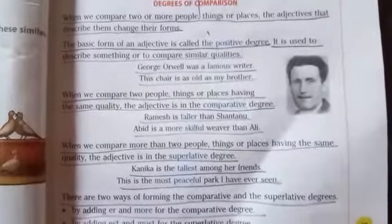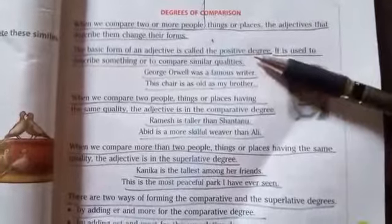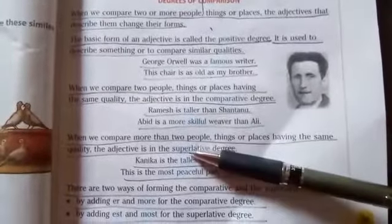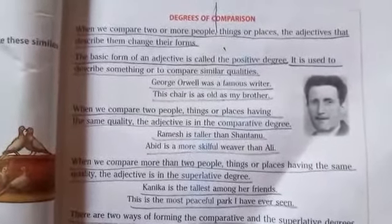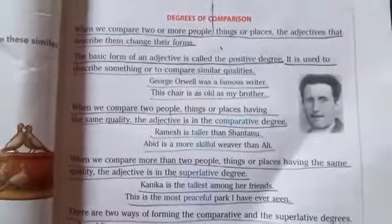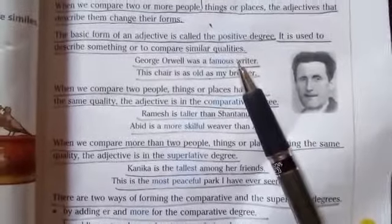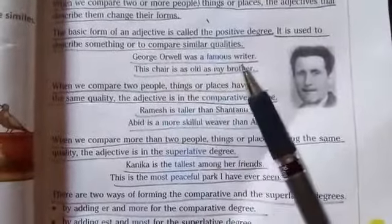The basic form of an adjective is called the positive degree. All of you know very well that there are three kinds of degrees of comparison: positive degree, comparative degree, and superlative degree. The positive degree is the first and basic form of an adjective. It qualifies about a single person, place or thing. It is used to describe something or to compare similar qualities.